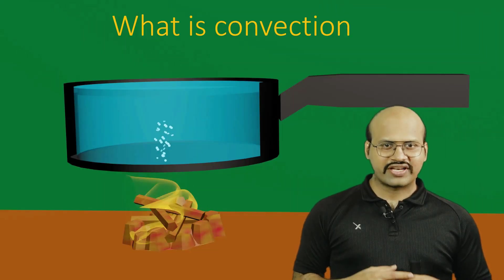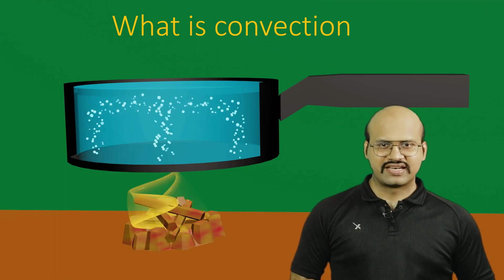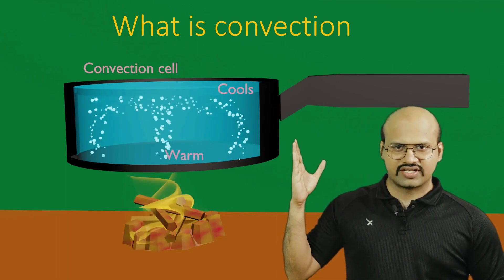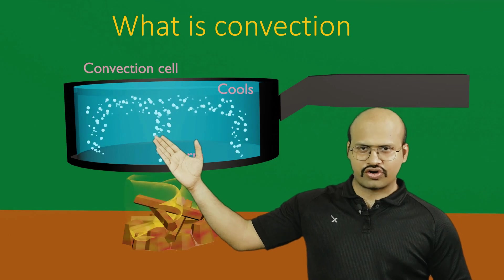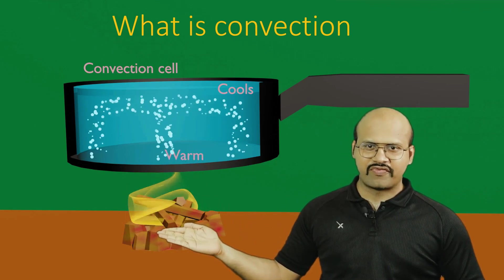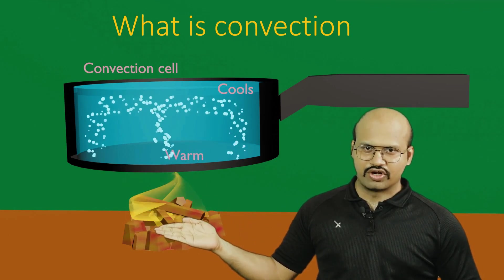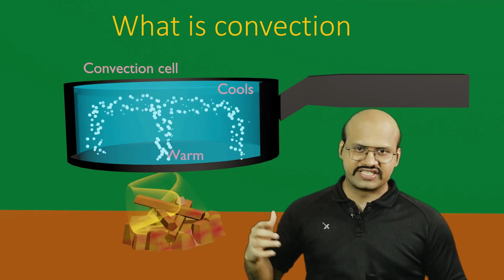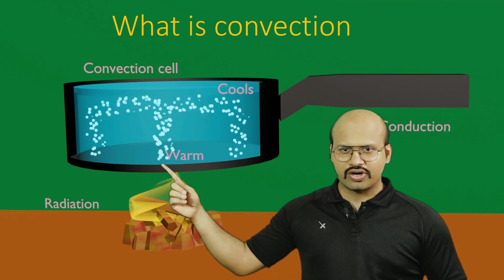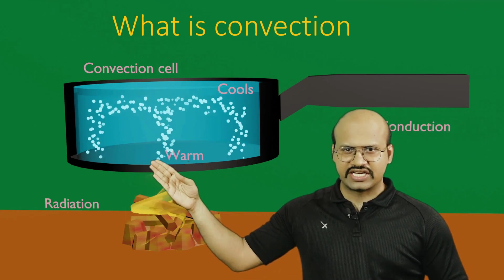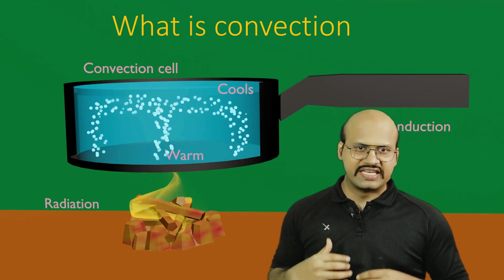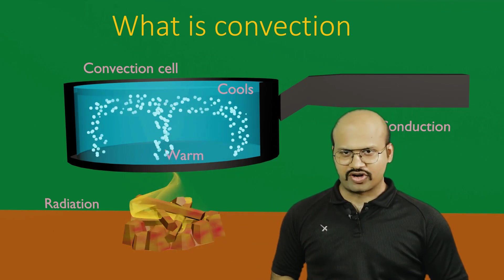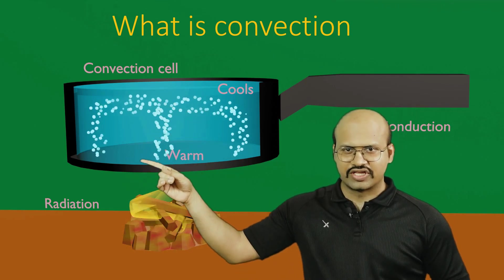So what is convection? To understand this, let's see this animation where we can see a utensil with water being heated from fire below. We can see that the lower portion of this water is heated first. The water molecules which are heated rise up because heated water molecules are lighter than the colder water molecules, and therefore they will rise up.